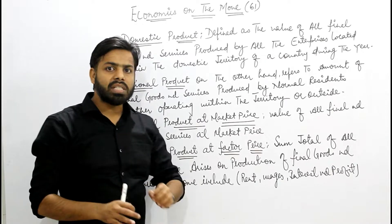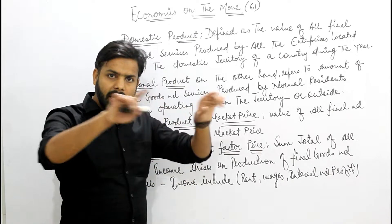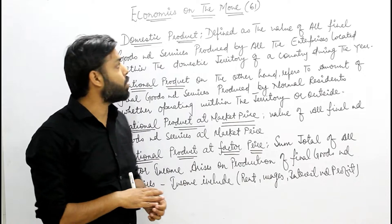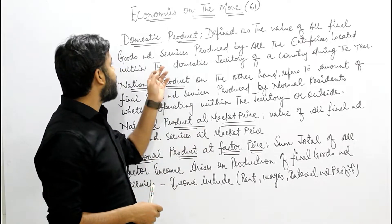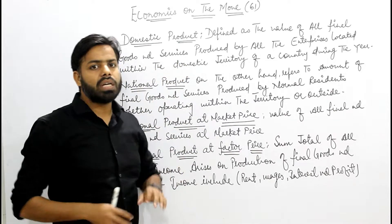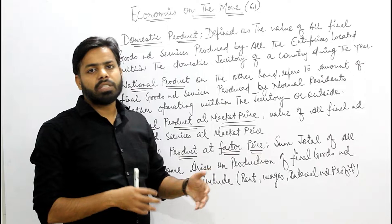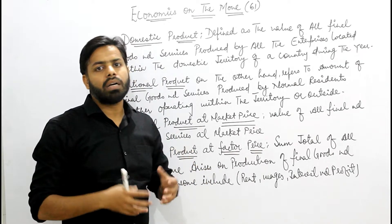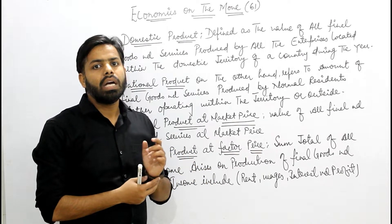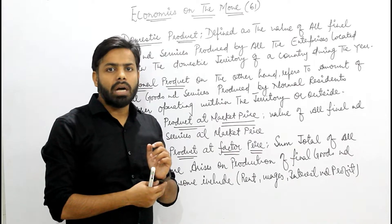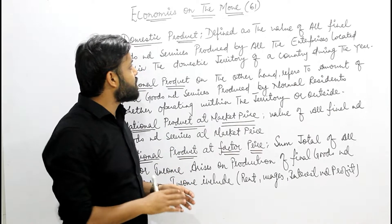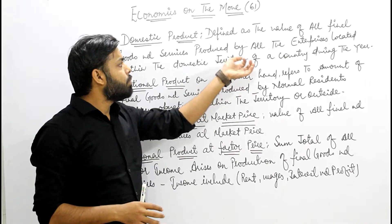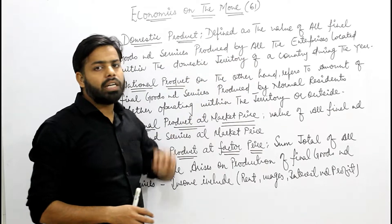Now, domestic product means within India's geographical boundary. It means the value of all final goods and services — final goods and services means the goods prepared for consumers. The domestic product is the value of all final goods and services produced by all enterprises.